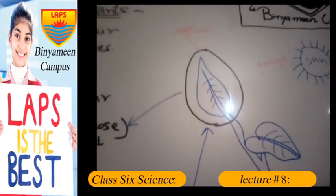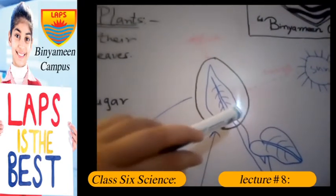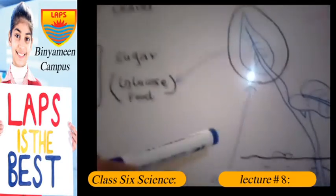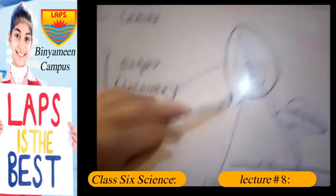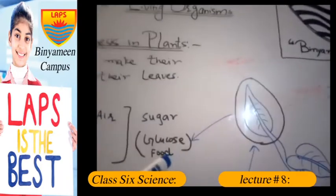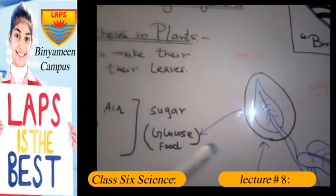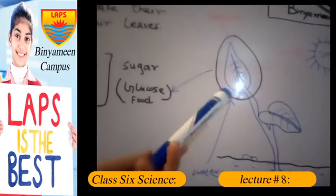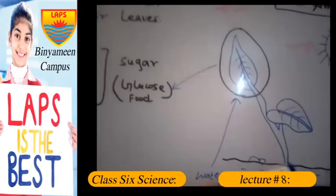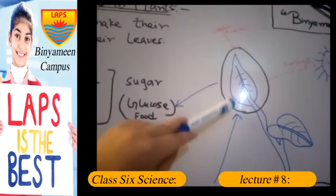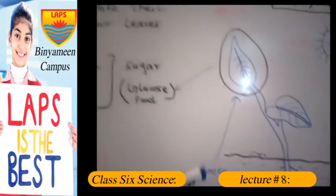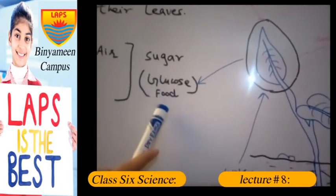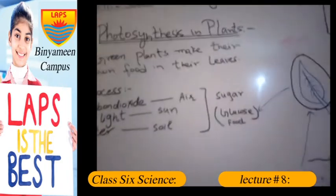When sunlight falls on the leaves, the plant takes in carbon dioxide from the air and water from the soil. The leaves convert these into glucose, which is the plant's food. This is the photosynthesis process. Photosynthesis requires three factors: carbon dioxide, water, and sunlight. When these three factors are present, the plant prepares its food.